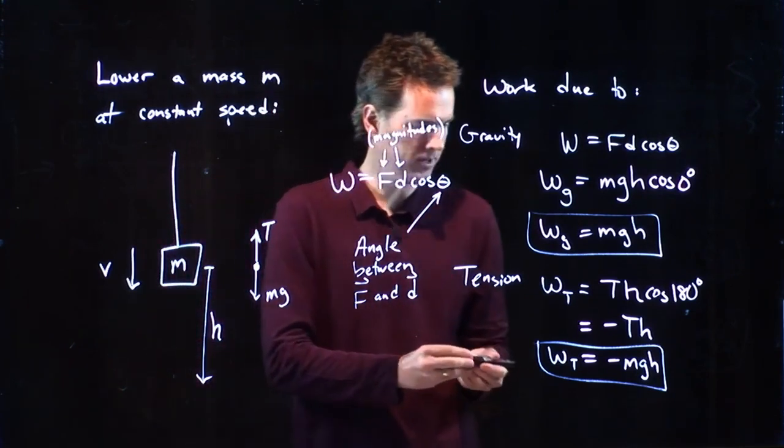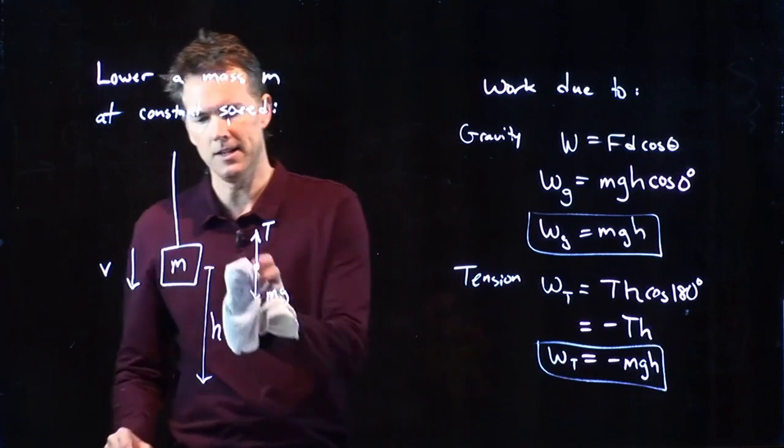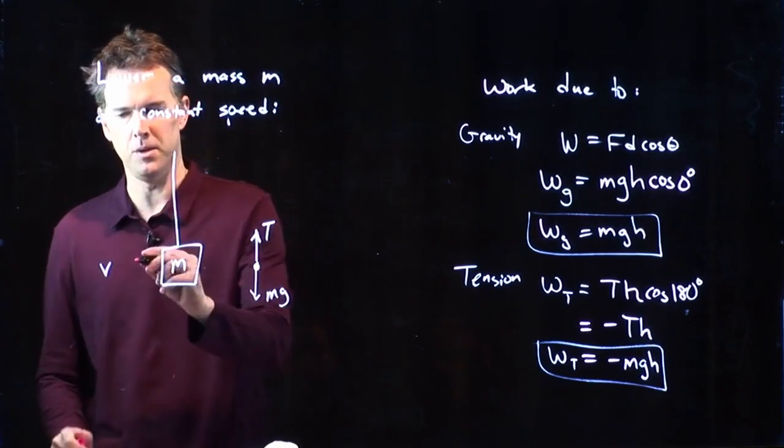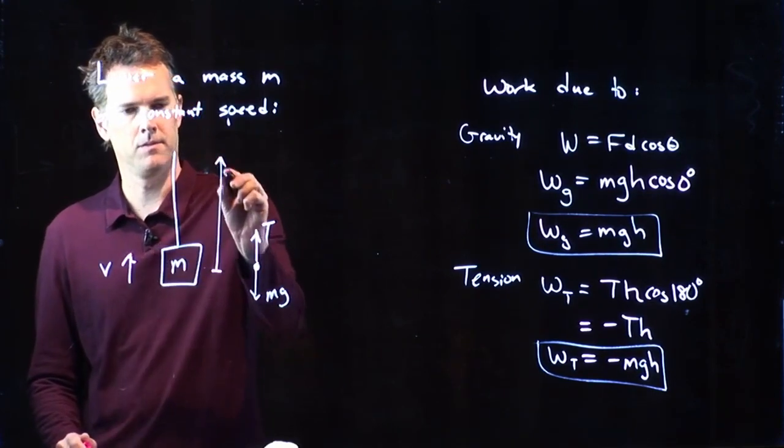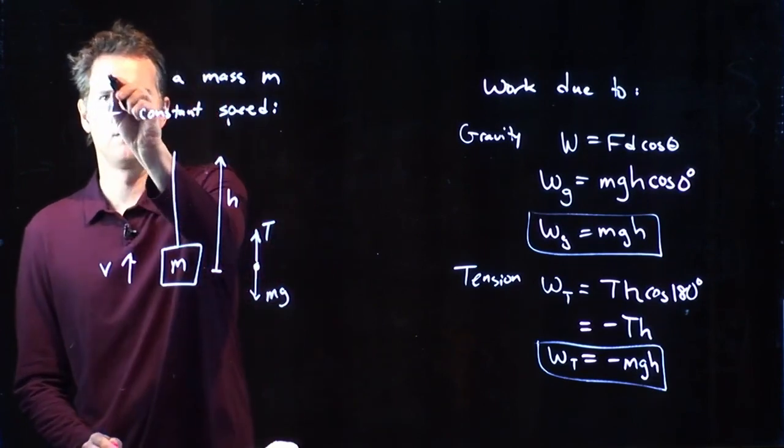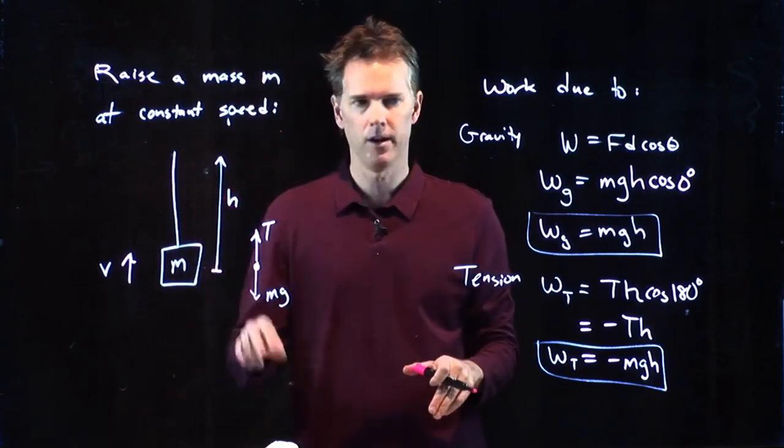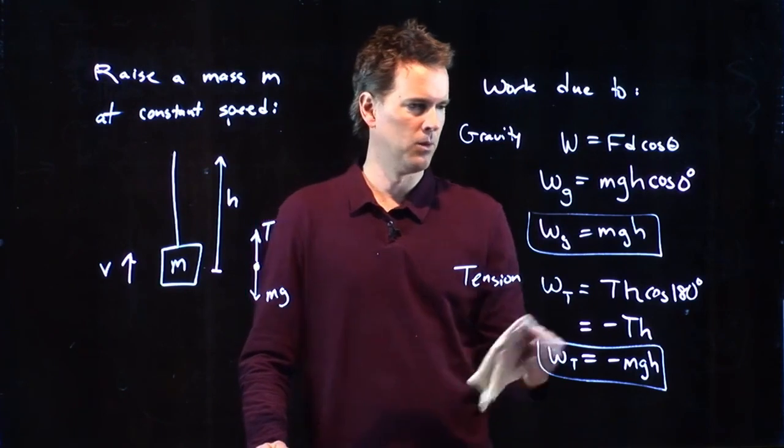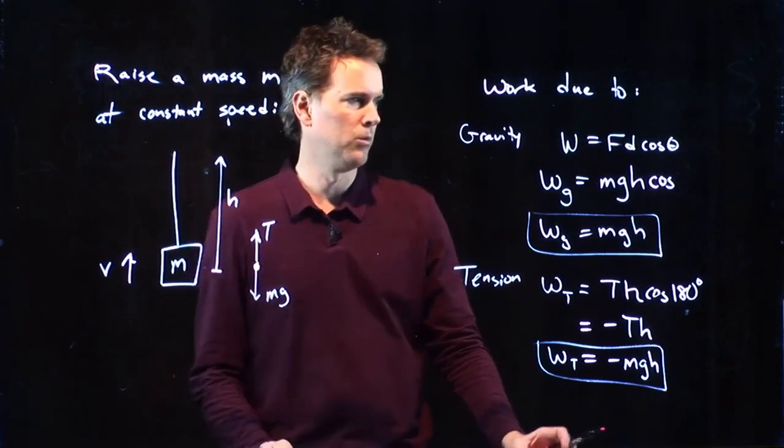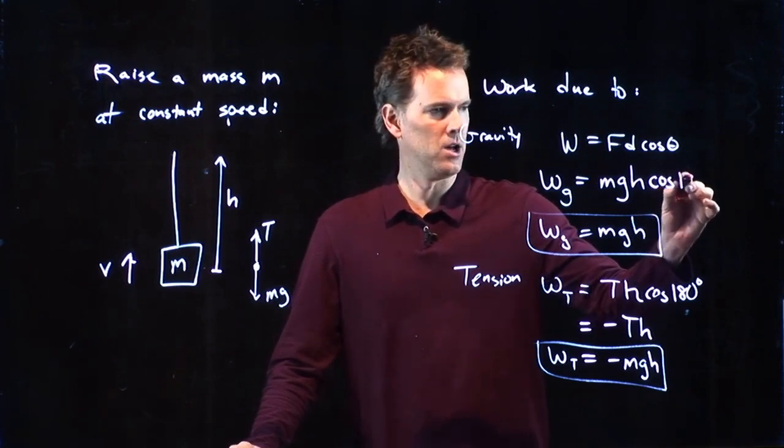All right. Let's go back to this problem for a second. We just looked at the problem where we're going to lower this mass at constant speed. Let's do a slightly different problem where we raise it at constant speed. If we raise the mass at constant speed instead of lower it, how do these answers change here? Well, the first one, theta for gravity versus displacement. What do I put here? 180? 180 degrees.